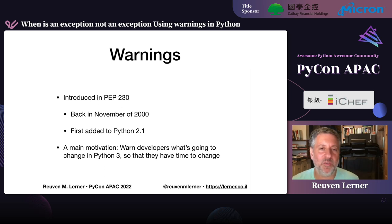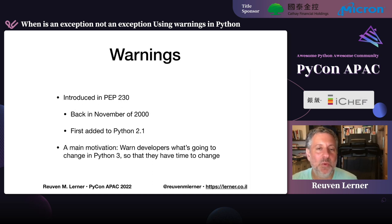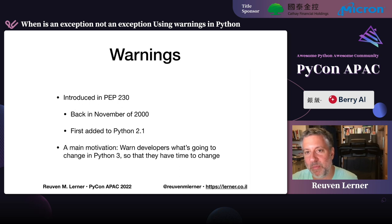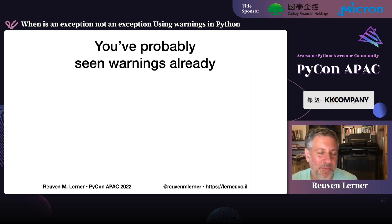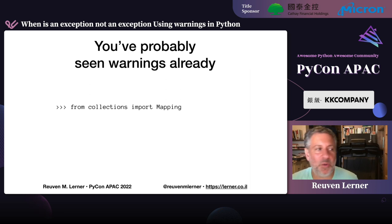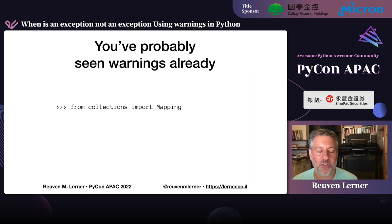One of the reasons warnings were added to Python was that even then they knew there were going to be breaking changes in Python 3. So this was a way of saying: hey, you probably want to change what you're doing here so that things will work when we switch to Python 3. You have probably seen warnings already in your use of Python. Here's an example from a version or two ago: if you say 'from collections import Mapping,' as of Python 3.10, this no longer works.